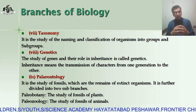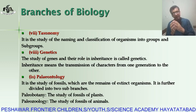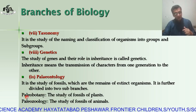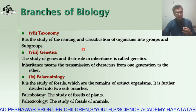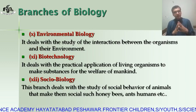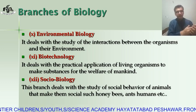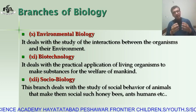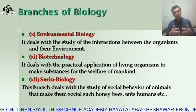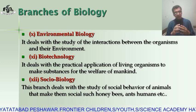Next is paleontology. In paleontology, we study fossils — the dead remains of living organisms. Paleontology is further divided into paleobotany, which studies fossil plants, and paleozoology, which studies fossil animals. The next branch is environmental biology, in which we study the interaction of living organisms with their environment. The environment has two factors: biotic factors, which are living, and abiotic factors, which are non-living, such as air and water. Environmental biology will also be discussed in one chapter in Class 9.